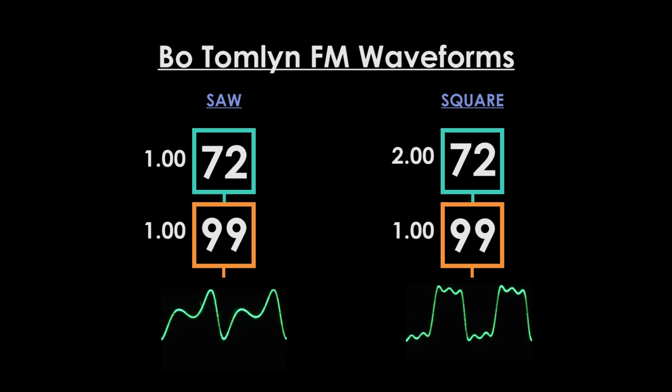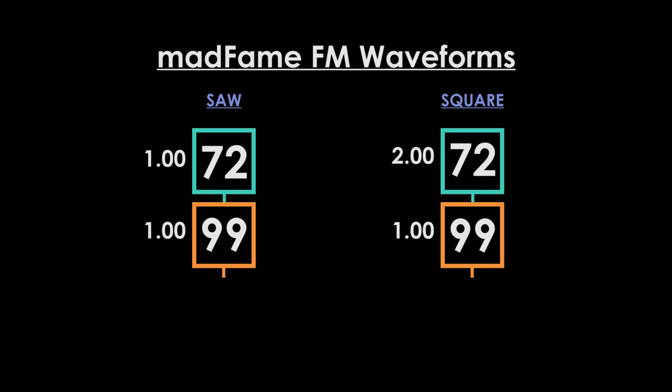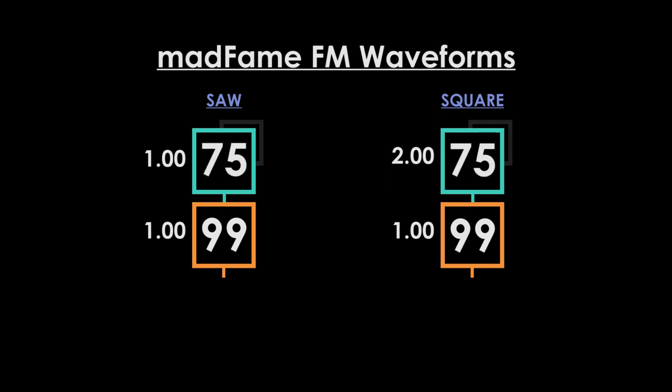I tried adding an extra modulator but this didn't improve the sound. Also, using three operators for a basic waveform isn't very economical, especially when using a four operator synth. So I went back to two operators, increased the modulator's output level to 75, and used the feedback loop, which greatly improved the sound and wave shape for both saw and square.